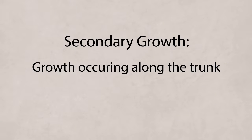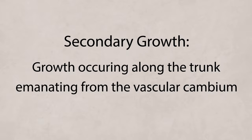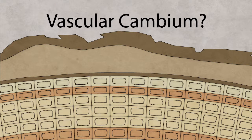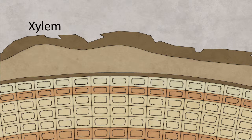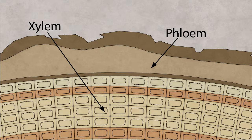Secondary growth is growth occurring along the trunk, emanating from the vascular cambium. The vascular cambium is a thin layer of rapidly dividing cells just inside the bark of a tree's trunk. The vascular cambium gives rise to two types of tissue: xylem tissue on the side facing the interior of the tree, and phloem tissue on the side facing the bark.